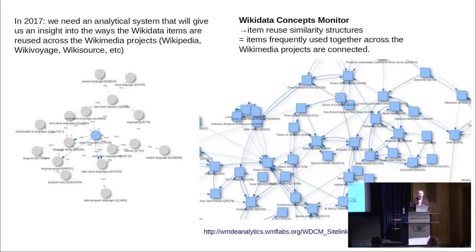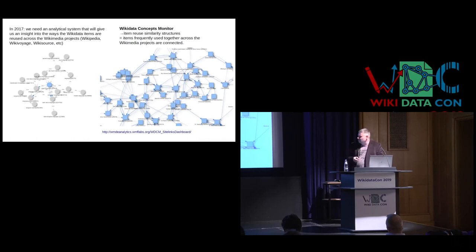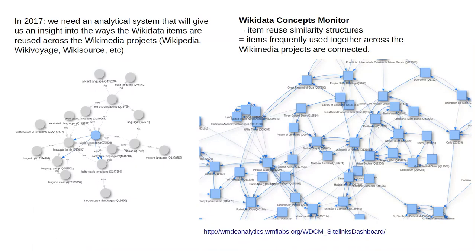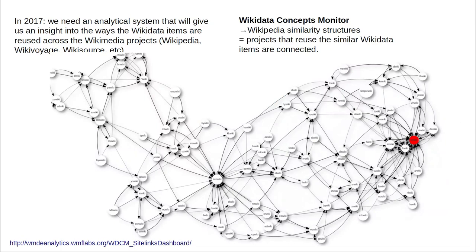You count how many times a particular item has been used in each project, giving you an array of numbers to describe that item — these are called embeddings. You can describe all items in Wikidata that were ever used across any website by such arrays. From those data, using different distance metrics, machine learning methods, dimensionality reductions, and similar techniques, you can figure out the similarity pattern — how similar items are in their patterns of usage across different Wikipedias.